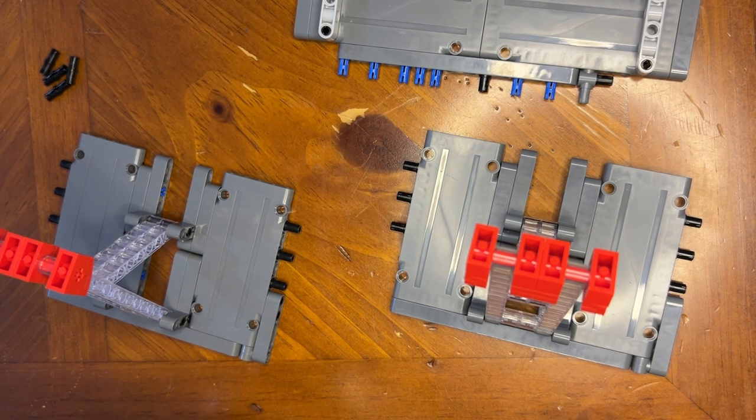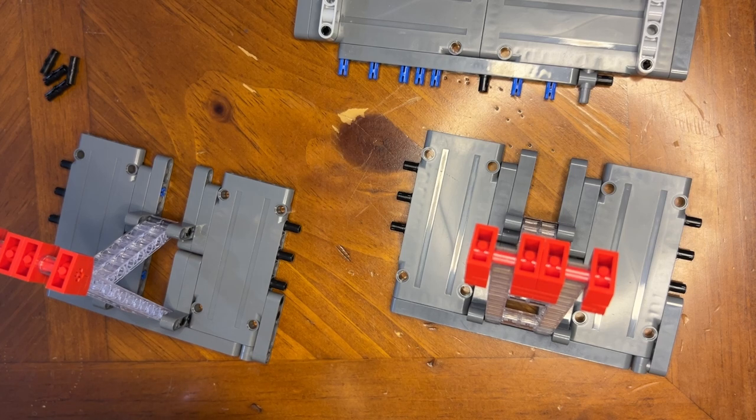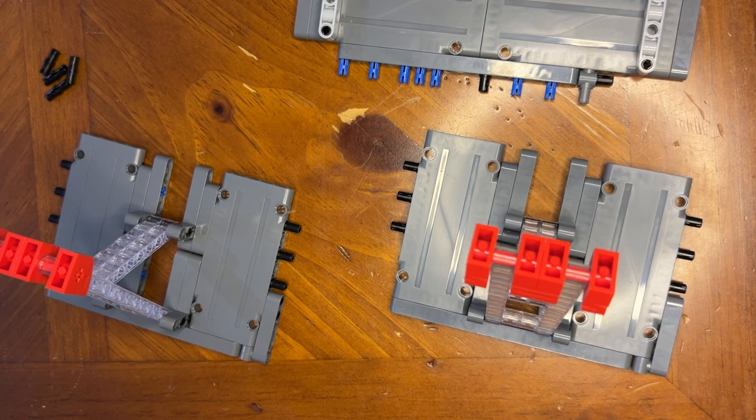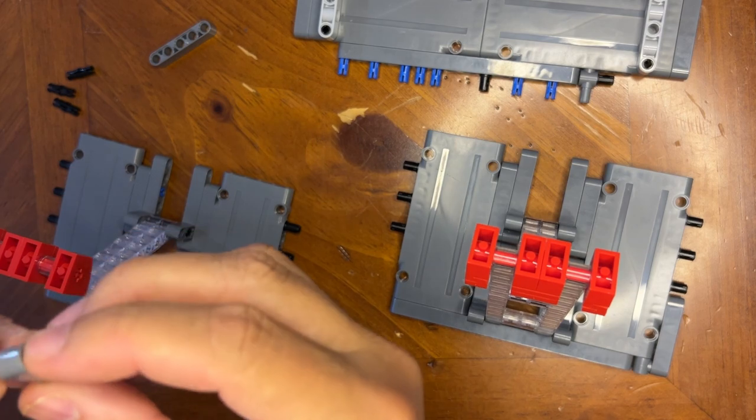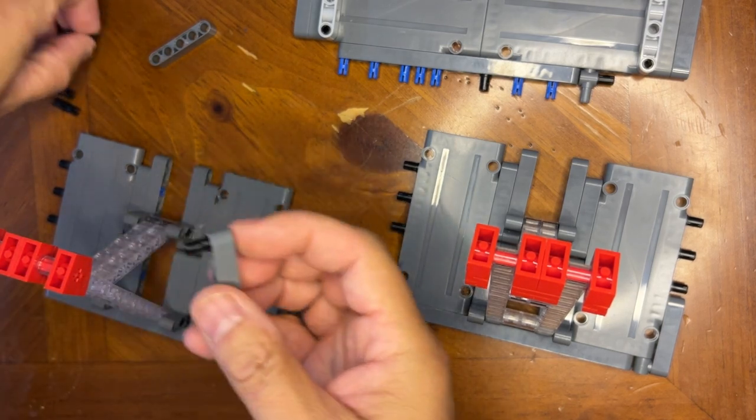Alright, so let's go look for two of those smaller pieces. There we go. I've already got these - I'm like, why did I need eight of these? Now I know.